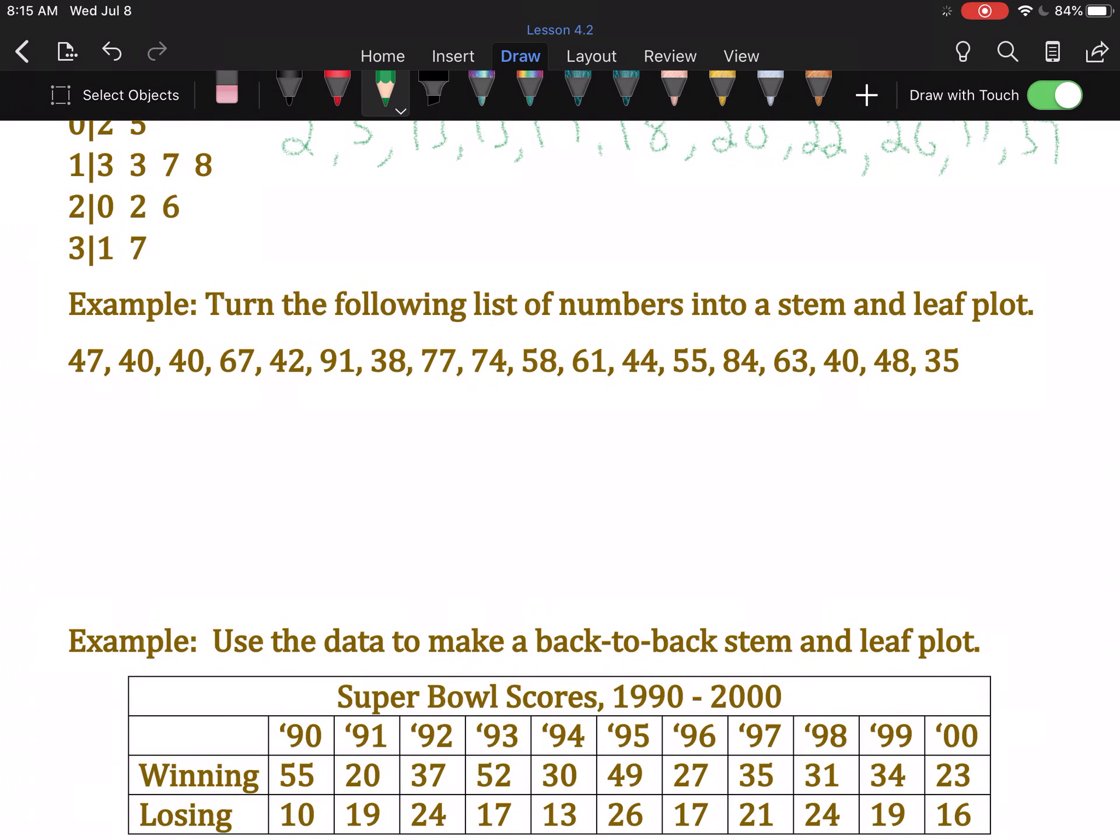Turn these numbers into a stem and leaf plot. So we want to look through here and find the smallest number, which looks like 35, and the biggest number, which I believe is 91. That would mean we need stems of 3, 4, 5, 6, 7, 8, and 9.